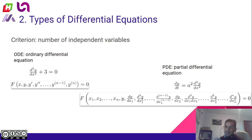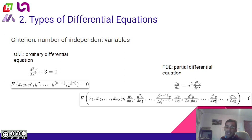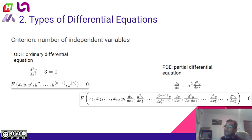Both of them depend on the number of independent variables, and we have a general way to write each one of them. This general structure tells us how we are going to write a differential equation formally. This is the general structure for an ODE, and the second one is the general structure for a PDE.